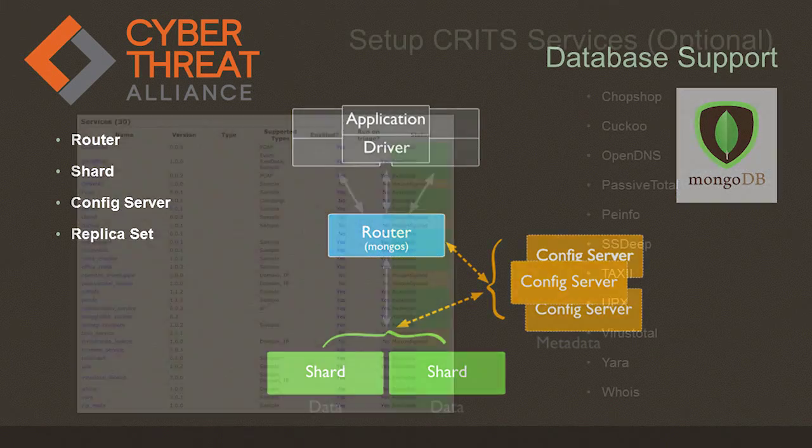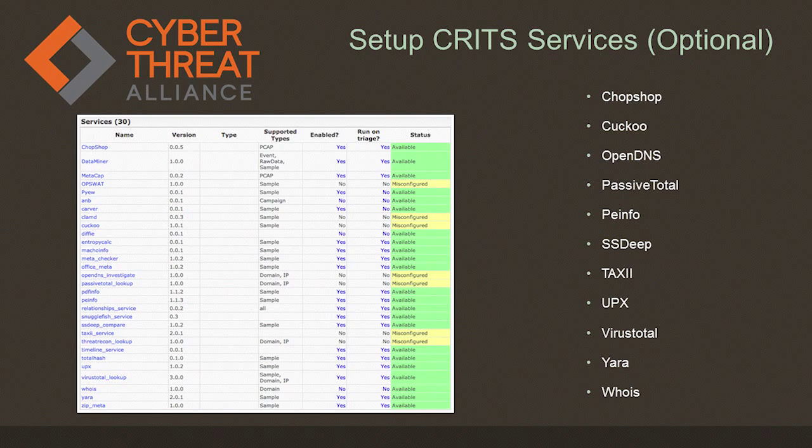The other interesting part of CRITS is the ability to expand on that threat data. When you upload a sample to CRITS, it's not just that one sample — you can actually run plugins to do a lot more with that sample automatically. You can tie it in with Cuckoo, an open source sandbox; OpenDNS, which provides free API access; PassiveTotal; PE Info; SSDEEP; and a few others. UPX, which is a free unpacker tool. Every time you upload a sample, CRITS will identify it and go out and query any of these open source tools against it, putting that data back into CRITS for you to very quickly see. So if you upload a packed sample and you're not sure what the packer is, CRITS will run UPX in the background and without the researcher having to do anything, it will quickly be tagged — for example, as Armadillo or another packer.